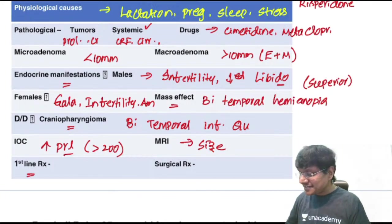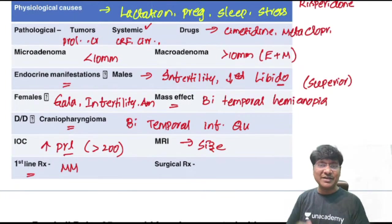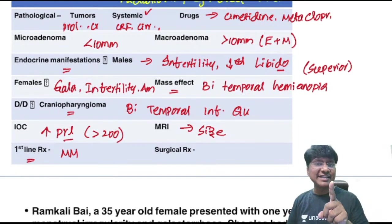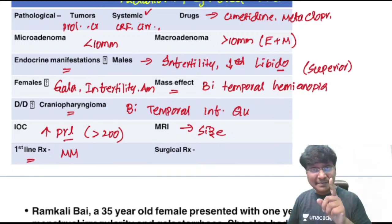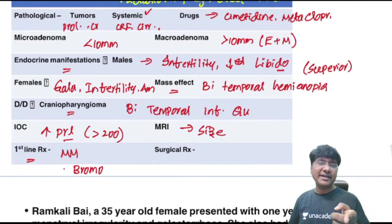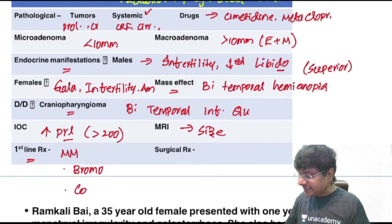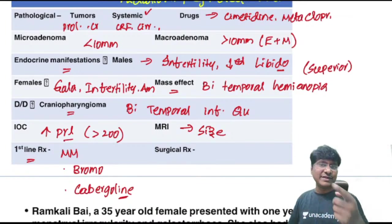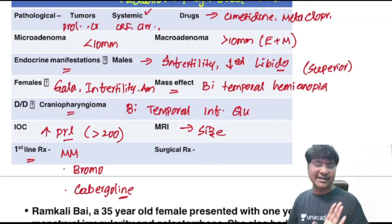First line treatment is medical management whether micro or macroadenoma. In pregnant females, the drug of choice is bromocriptine. In non-pregnant females or males, the drug of choice is cabergoline. Surgical treatment is transsphenoidal pituitary adenectomy.